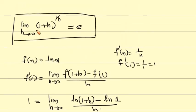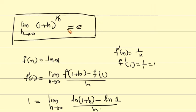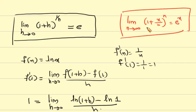The result limit as h tends to 0 of (1+h)^(1/h) equals e is very, very important. A related result: limit as n tends to infinity of (1 + x/n)^n equals e^x. This is also a very important limit.